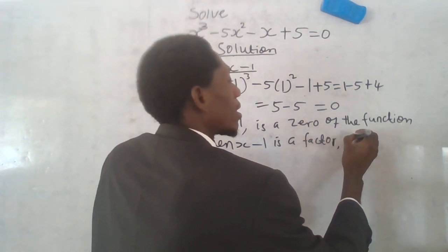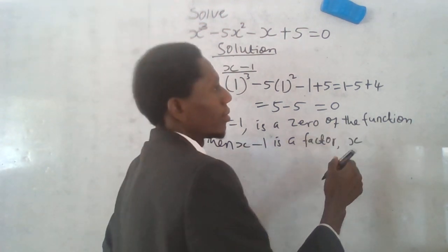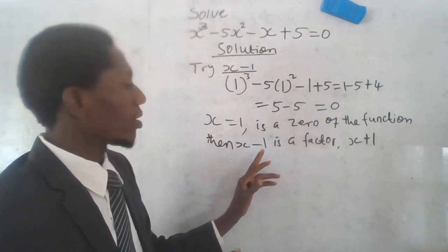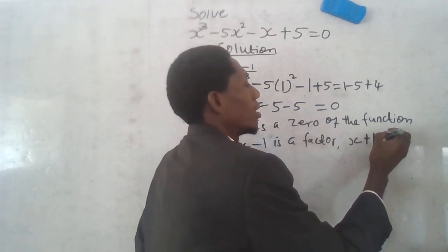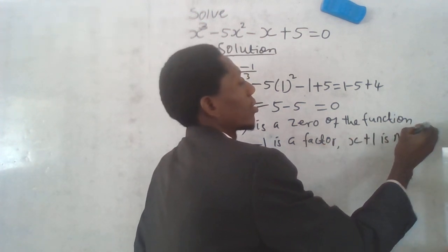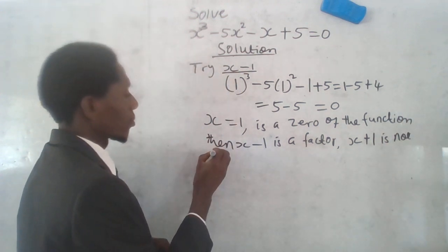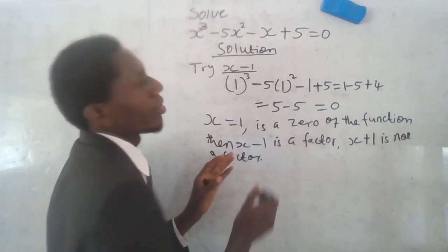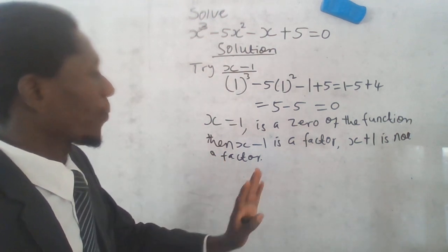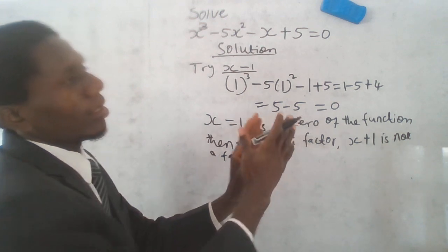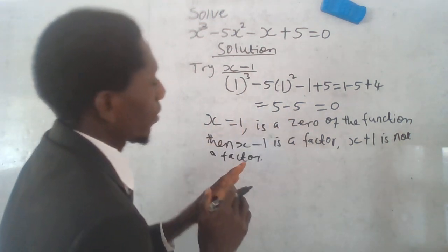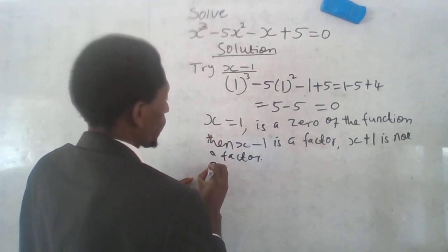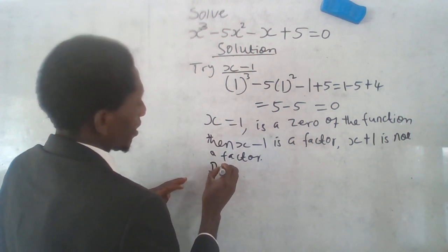And then x minus one, I mean x plus one. Already we have x minus one here which is a factor. And x plus one is not a factor. So we are going to try to divide and see whether we can have a better result. Let's see. Dividing.